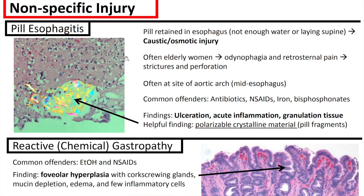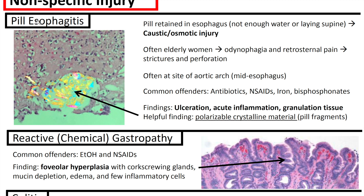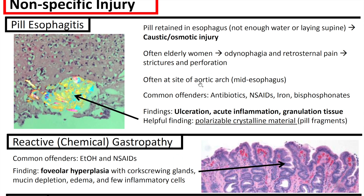The first section is nonspecific injury. We can get pill esophagitis when a pill is retained in the esophagus and there's not enough water or the patient is laying supine, which can lead to caustic or osmotic injury. Often occurs in elderly women, can lead to odynophagia or painful swallowing, retrosternal pain, and can also lead to strictures and perforation. Often occurs at the site of the aortic arch in the mid esophagus. Common offenders in pill esophagitis are antibiotics, NSAIDs, iron, and bisphosphonates. Findings include ulceration, acute inflammation, granulation tissue, and a helpful finding is polarizable crystalline material — these are actually pill fragments.